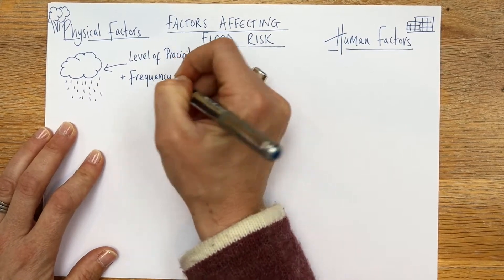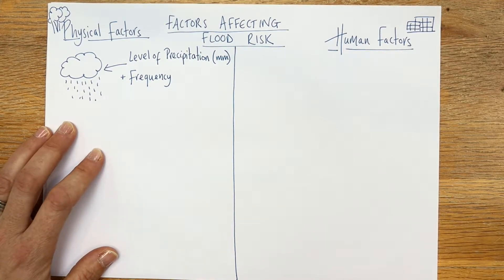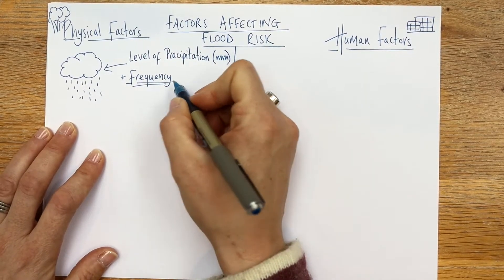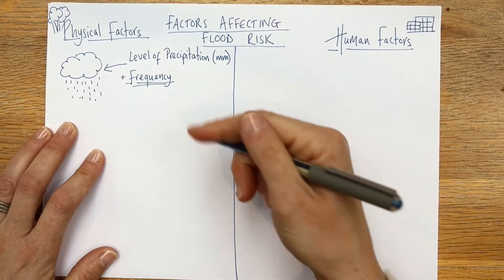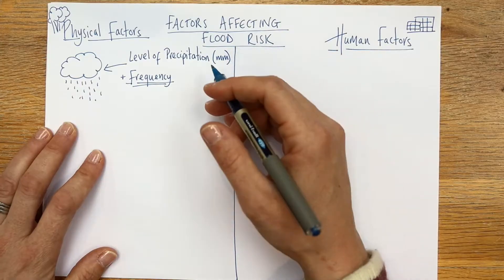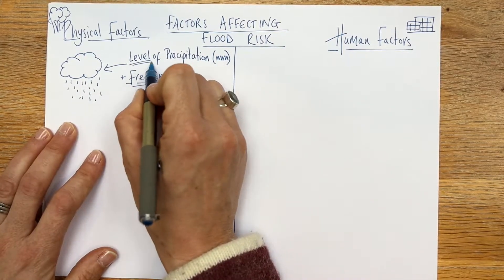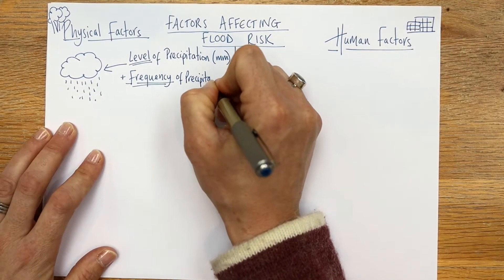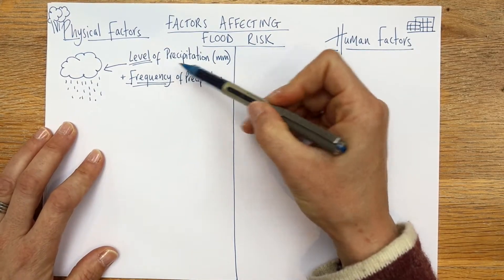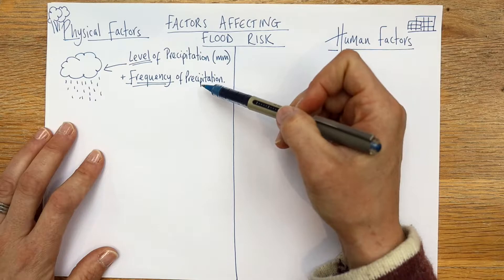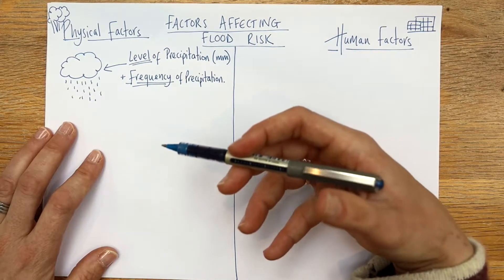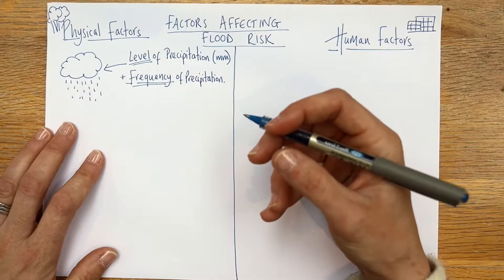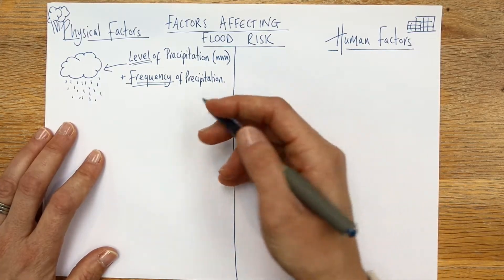We talk about frequency of tropical storms or how often extreme weather events happen. If there's a high level of precipitation and a high frequency, the land is going to become saturated. That's what causes flooding, because it cannot absorb all that rainwater into groundwater stores. Rivers become strained, they burst their banks. In brackets, note: prolonged rainfall.